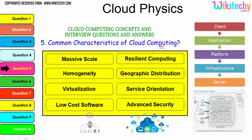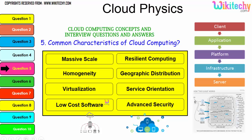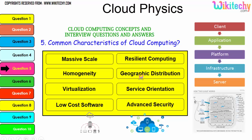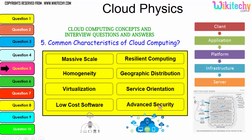Let's talk about the common characteristics of cloud computing. First, massive scale — however big you need, it can be provided. Homogeneity — you can use homogeneous systems. Virtualization — you can create a virtual machine and use it. Low-cost software — it becomes really cheap. Resilient computing — processing is done remotely without disturbances. Geographic distribution — data and computing are geographically distributed. Service orientation — it is based purely on service orientation. And advanced security, which is an important one.